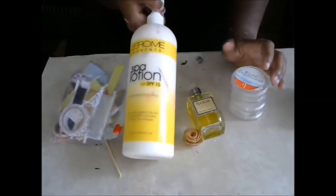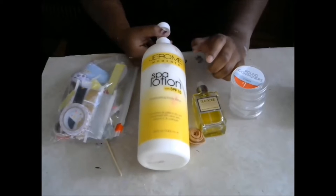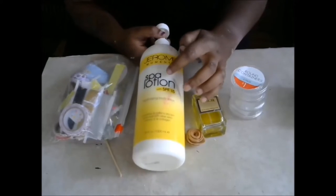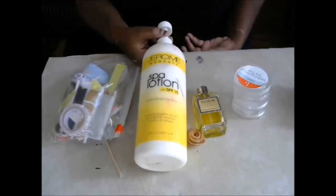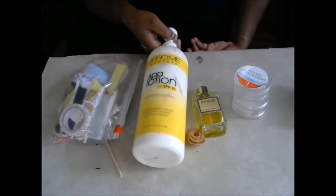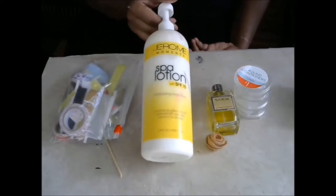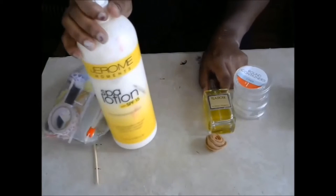So all you're going to need is just some containers and then I have a bottle of spa lotion by Jerome. But it can be any lotion that you want. Just make sure that it's unscented. This is the pump kind and it's unscented. It's really good. It has moisturizing properties. It has vitamin E and it's really good. So I like using that one. So that's what I'm going to use this time.